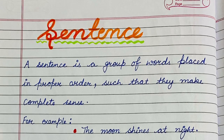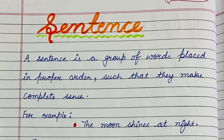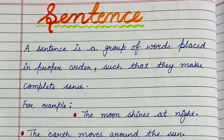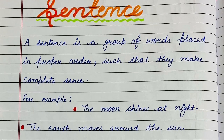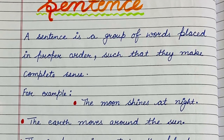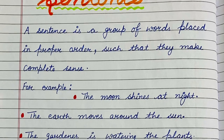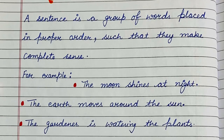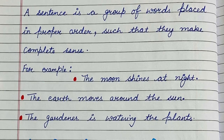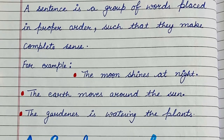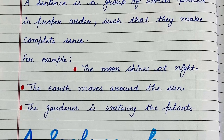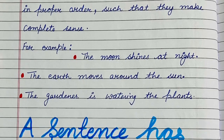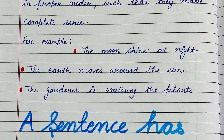So first of all, I will discuss about sentence. What is a sentence? A sentence is a group of words placed in proper order such that they make a complete sense. A sentence cannot be some random group of words which you can place anywhere. If you make a sentence with words placed anywhere, you will not be able to convey your meaning. So a sentence is a group of words placed in proper order so that they can make a complete sense.